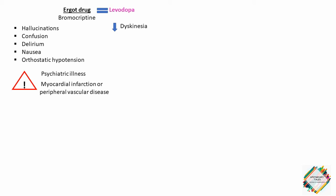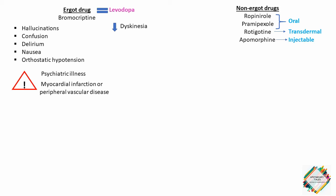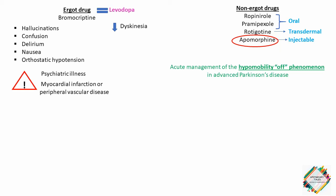Talking about the non-ergot derivatives — apomorphine, pramipexole, ropinirole and rotigotine — which are approved for the treatment of Parkinson's disease: pramipexole and ropinirole are orally active agents, whereas apomorphine and rotigotine are available in injectable and transdermal delivery systems respectively. Apomorphine is used for acute management of the hypomobility off-phenomenon in advanced Parkinson's disease. Rotigotine is administered as a once-daily transdermal patch that provides even drug levels over 24 hours. These agents alleviate motor deficits in patients who have never taken levodopa and also in those with advanced Parkinson's disease. Dopamine agonists may delay the need to use levodopa in early disease and may decrease the dose of levodopa in advanced disease.